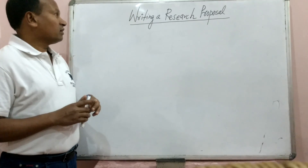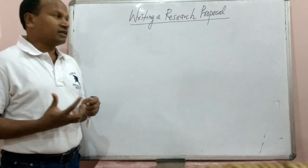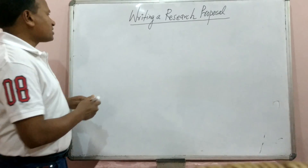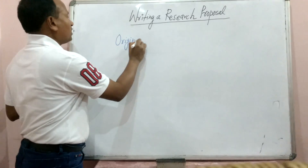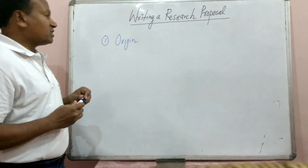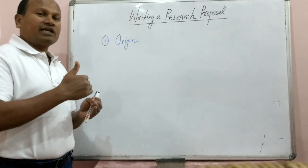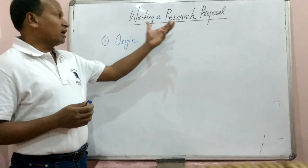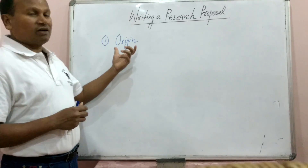Before we learn how to write a research proposal, we need to understand what are the components of a research proposal. The first component — and the most important component — is the origin of the research proposal. In most research proposal formats, you will see that it begins with origin. It asks you to write how did it originate in your mind, how this idea came into your mind about the topic of the research proposal which you are going to write. That is what is called the origin of the proposal.